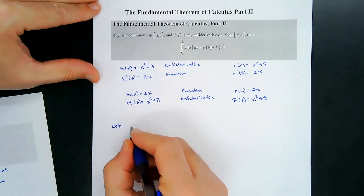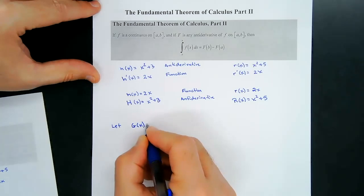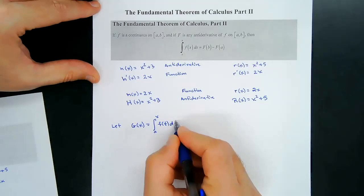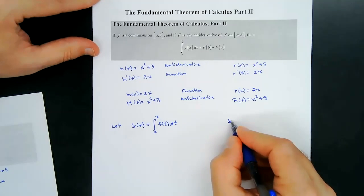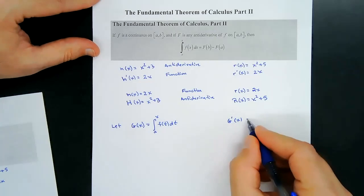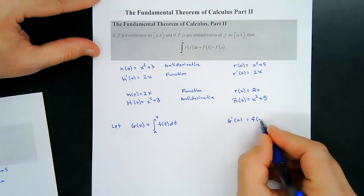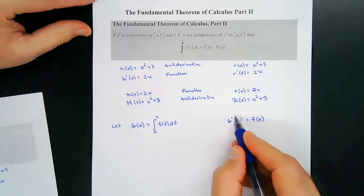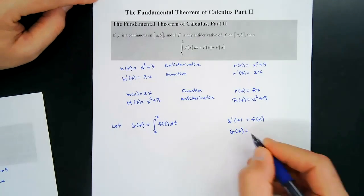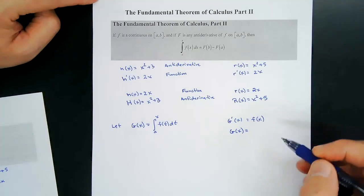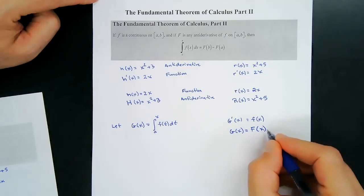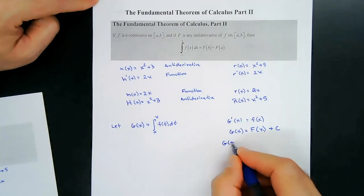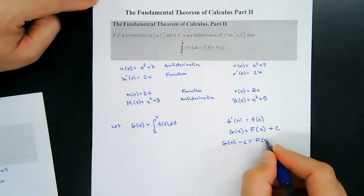We're going to let capital G of x — that's the integral function — equal the integral from a to x of f of t dt. From yesterday we know that capital G prime of x is equal to f of x; all we have to do is put the x in. So now we're going to take the antiderivative of both sides. The antiderivative of G prime would be G of x, and the antiderivative of f of x would be capital F of x plus some constant C.